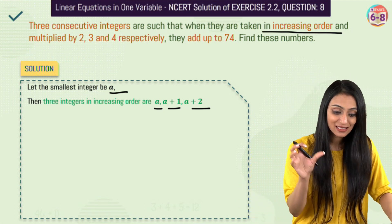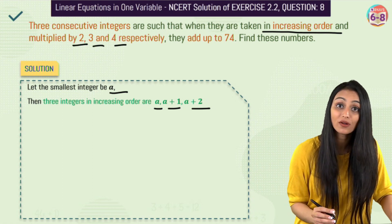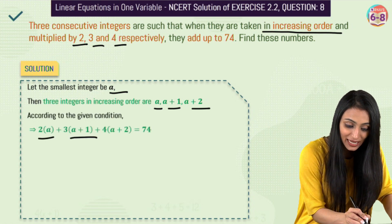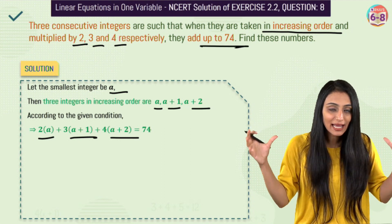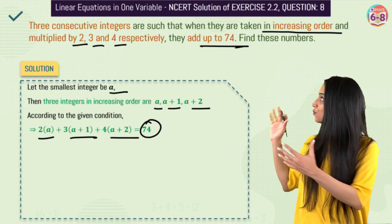Now when these integers taken in order are multiplied by 2, 3, and 4 respectively—that means if I multiply the first one with 2, second one with 3, and third one with 4, they add up to 74. And I add all them up, the result that I am going to get is 74. This is what I have done here.